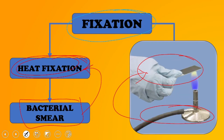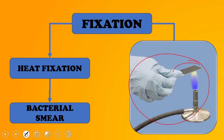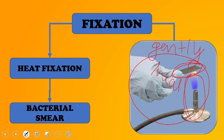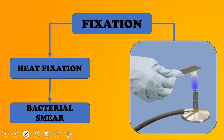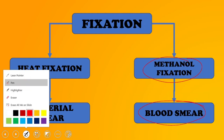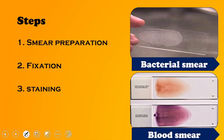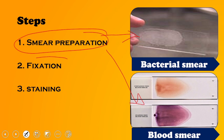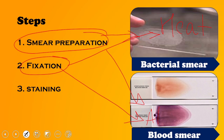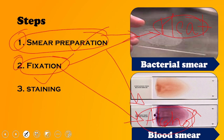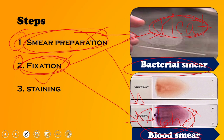Heat fixation involves gently heating the slide over a flame so that it gets fixed. Methanol fixation is mainly done for blood smears. To summarize: two types of smears — bacterial smear and blood smear. For a bacterial smear, go with heat fixation. For a blood smear, go with alcohol fixation.